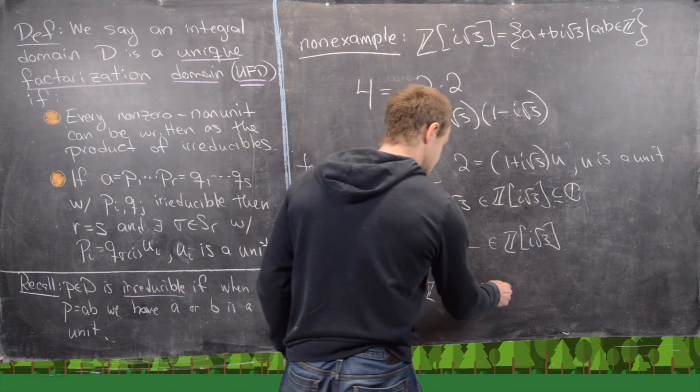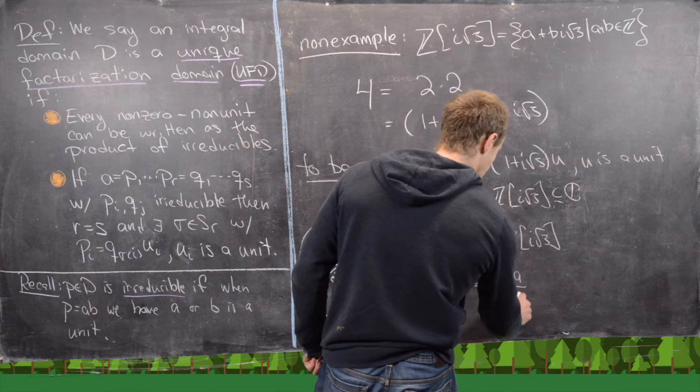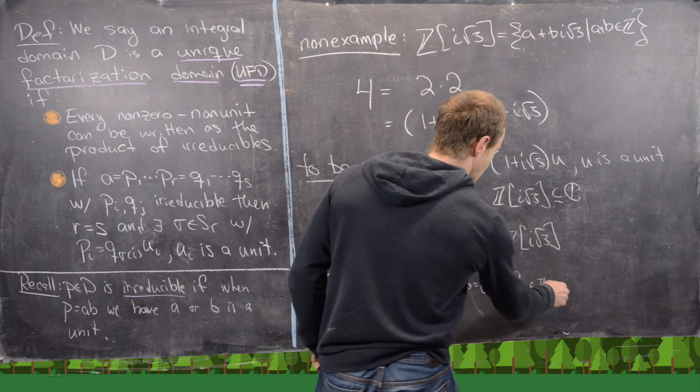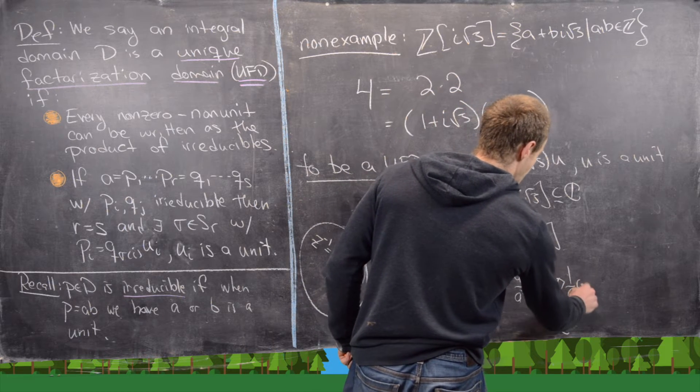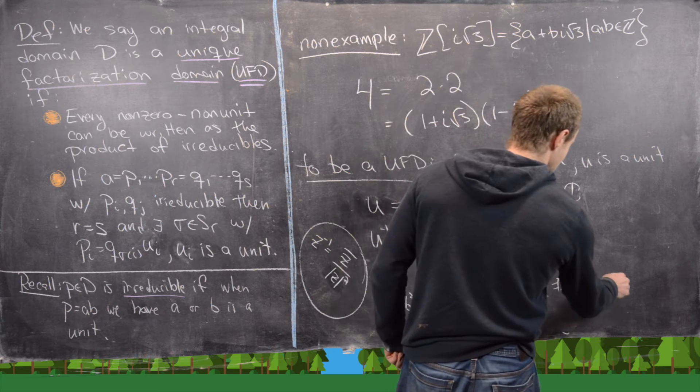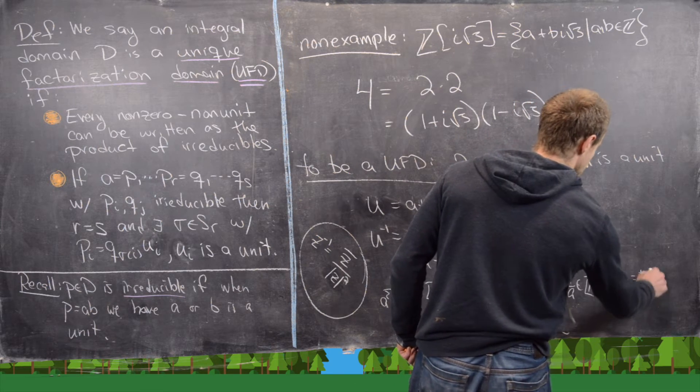So that means B equals 0. But what that tells us is that A over A squared is an integer. In other words, 1 over A is an integer.